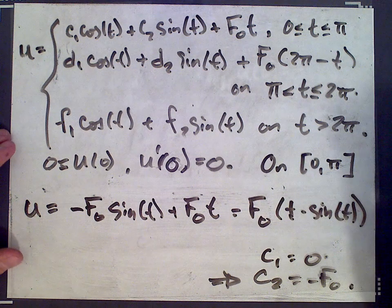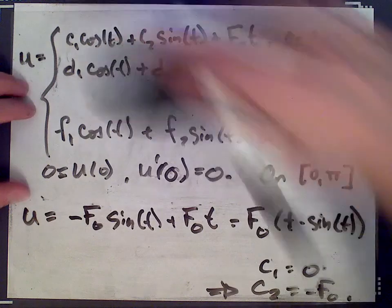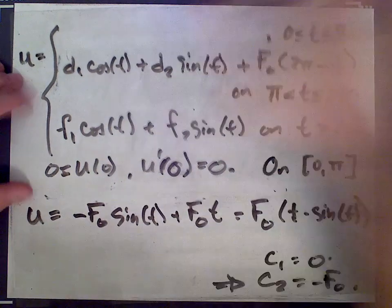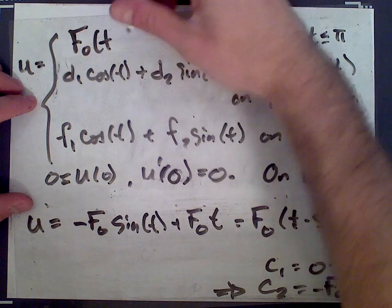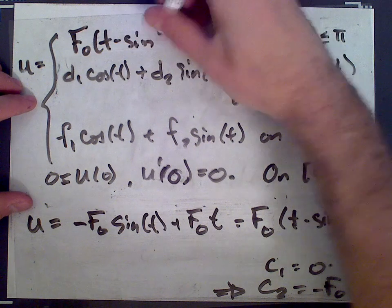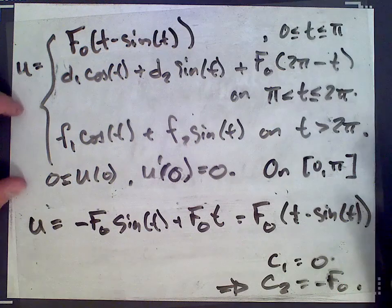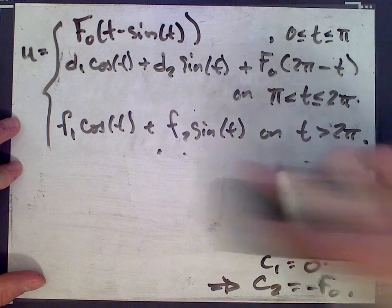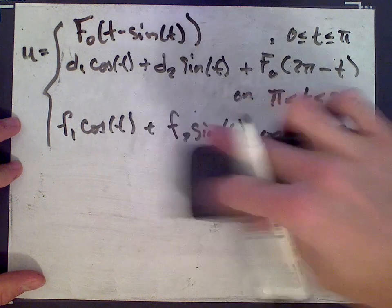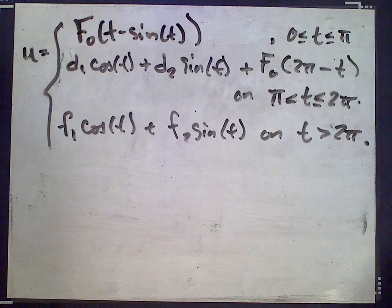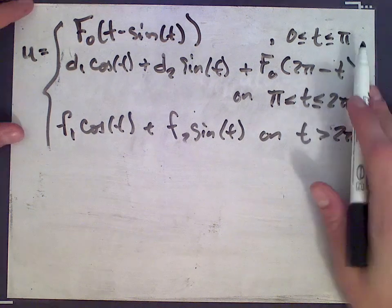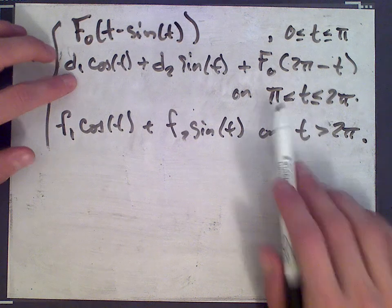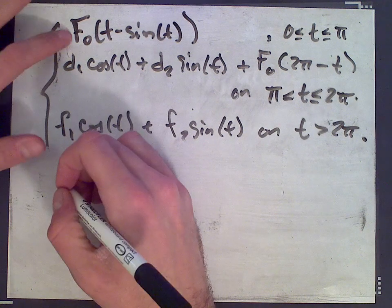So maybe I'll go ahead and place this up here. Okay, so now let's use the endpoint on that interval to solve for the... so the endpoint being π, so the value of u on that endpoint should match the value on the endpoint for the second definition here. So according to the first definition, what is u...